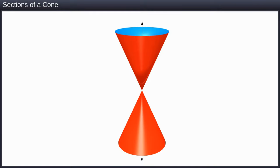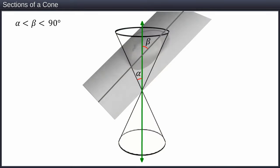If the plane intersects one nappe of the cone such that angle beta is greater than angle alpha but less than 90 degrees, the resulting conic section is an ellipse.